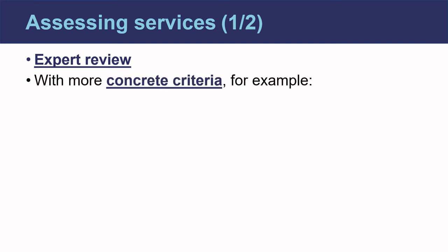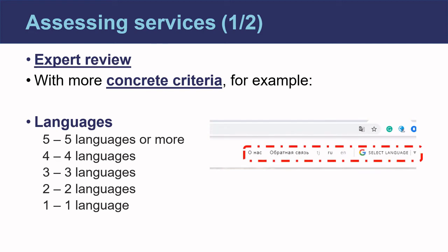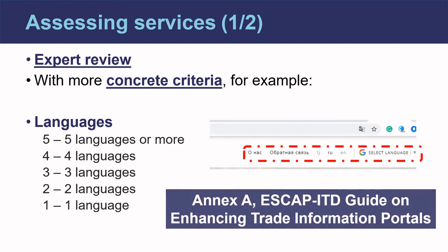For example, when evaluating the language selection, the team could agree ahead of time to give the TIP a score of 5 if it has 5 or more languages, 4 if it has 4 languages, and so on, all the way down to a 1 if it is only available in the TIP's local language. So we are using a numeric measure to assign our scores that is agreed upon by all the evaluators. Further guidance on making these assessments and some suggested scoring matrices are provided in Annex A of the SGAP ITD Guide on Enhancing Trade Information Portals.